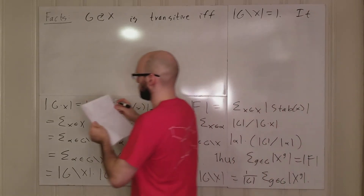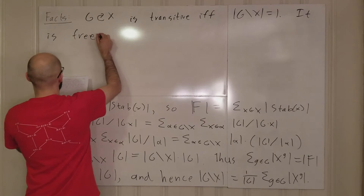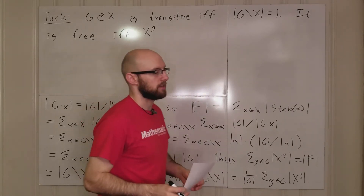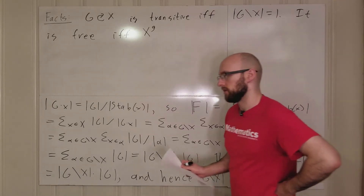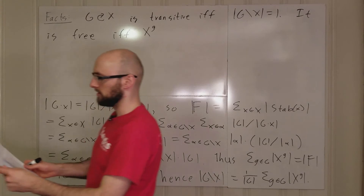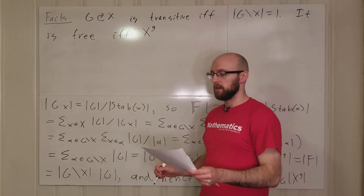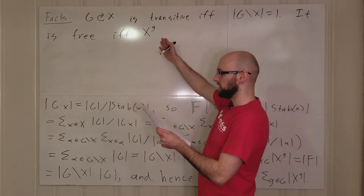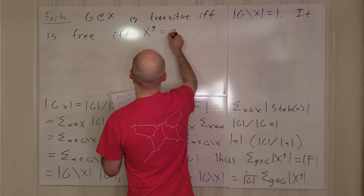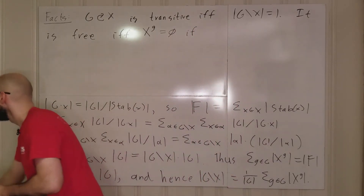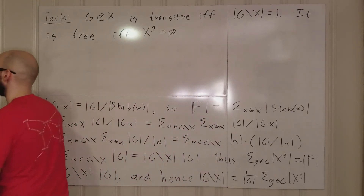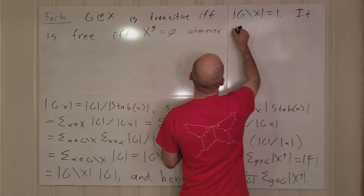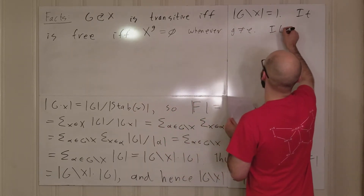The action is free if and only if the fixed points X^g are empty whenever g is not the identity. Free means: if g fixes any point x, then g must be the identity. So for any non-identity g, the collection of fixed points must be empty.